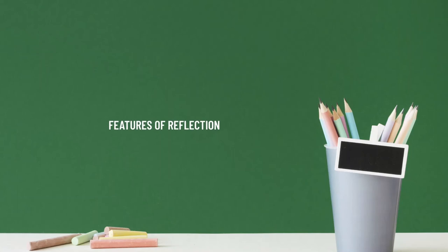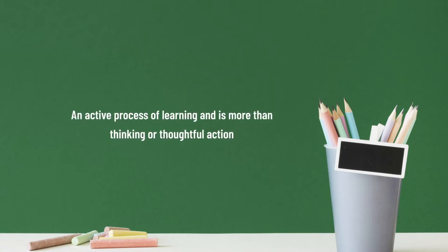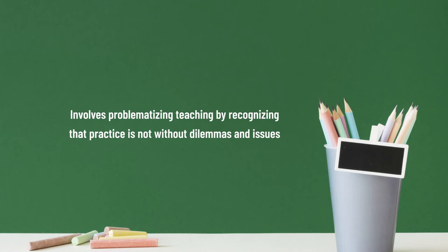What are the common features of reflection? Reflection results in learning through changing ideas and understanding of a situation. It is an active process of learning and is more than just thinking or thoughtful action. It involves problematizing teaching by recognizing that practice is not without dilemma or issues. Reflection is a cyclical process where it leads to new ideas which are then used to plan the next stage of learning. It encourages looking at issues from different perspectives, helping you scrutinize your own values, assumptions, and perspectives.